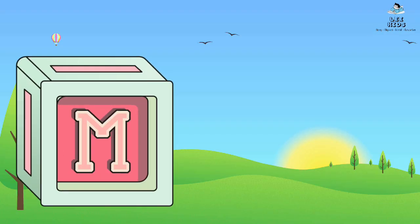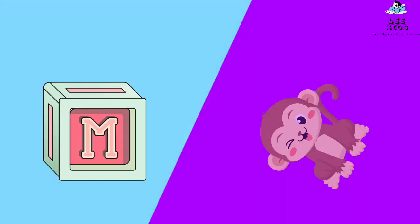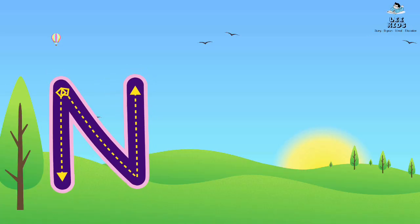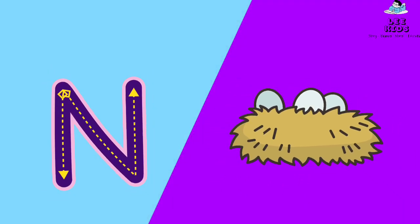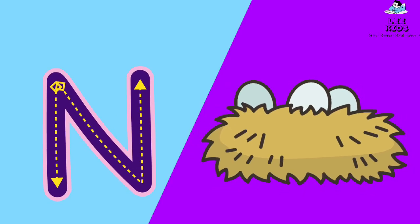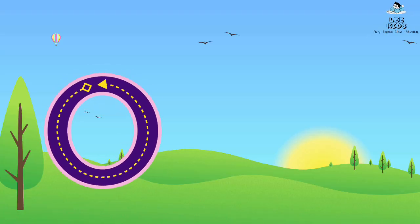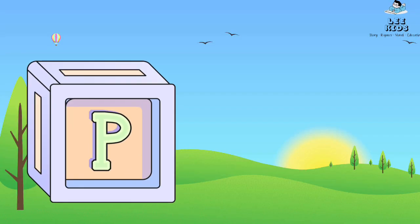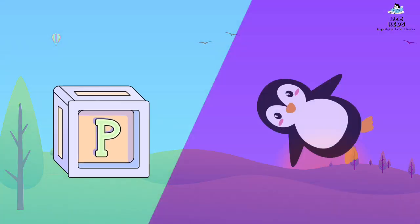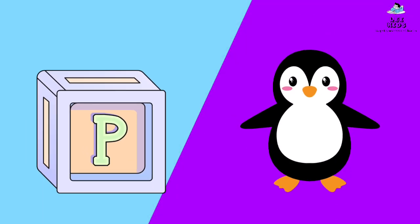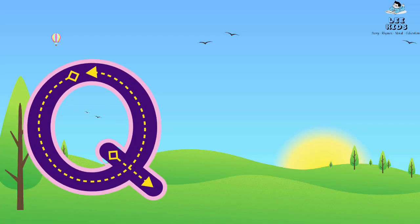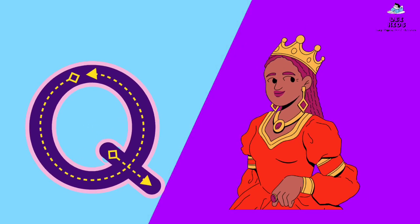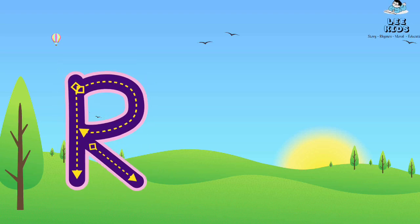M for monkey, N for nest, O for orange, P for penguin, Q for queen, R for rabbit.